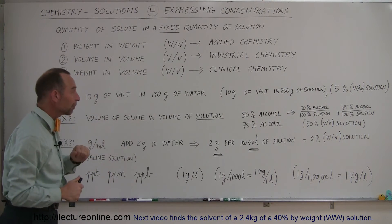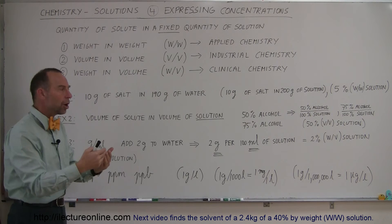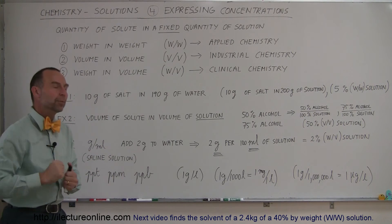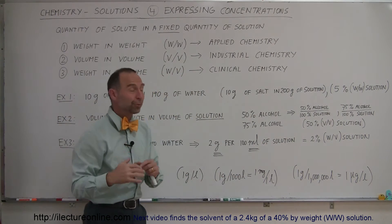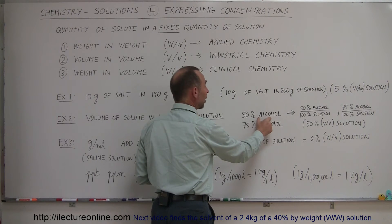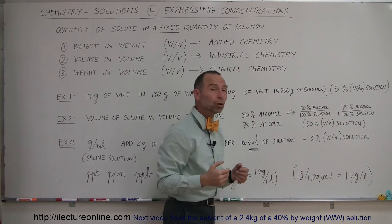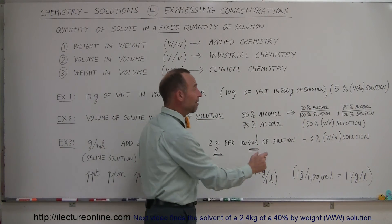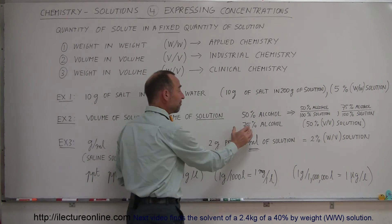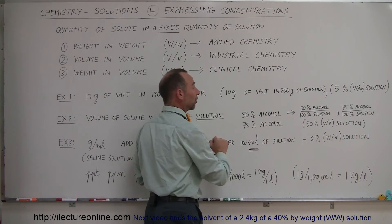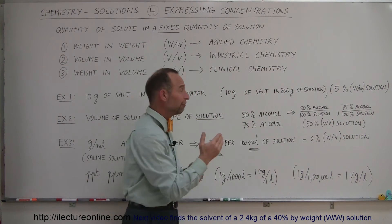Now let's talk about volume of solute to volume of solution. A good example is alcoholic beverages — what is the percentage of alcohol as a percentage of the total volume of the solution? If we have 50% alcohol, which is 100 proof and very strong, that means we have 50% alcohol relative to the 100% solution, or one-half of the solution is alcohol by volume — a 50% volume-to-volume solution. If 75% of the total solution is alcohol, we say it's a 75% volume-to-volume solution.